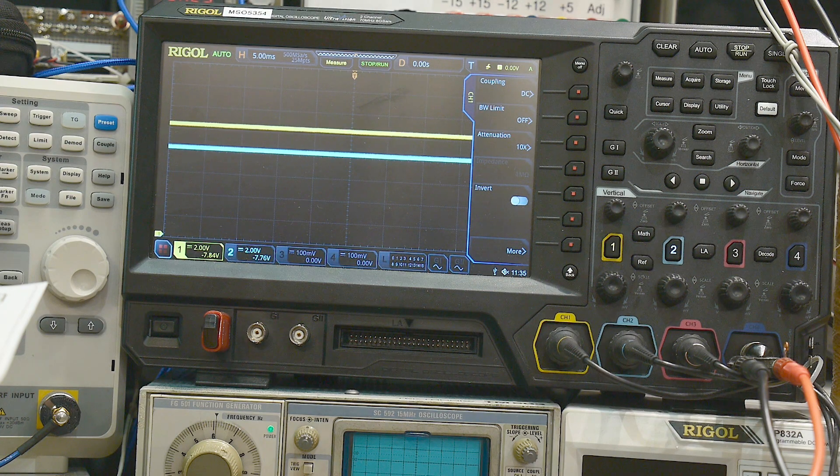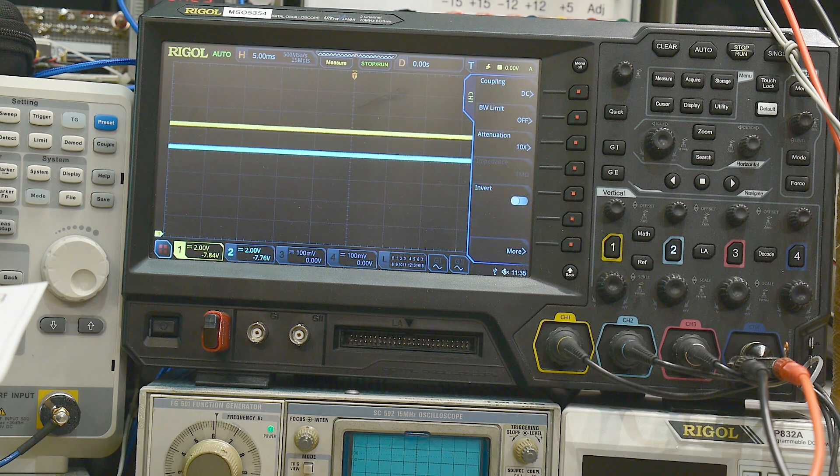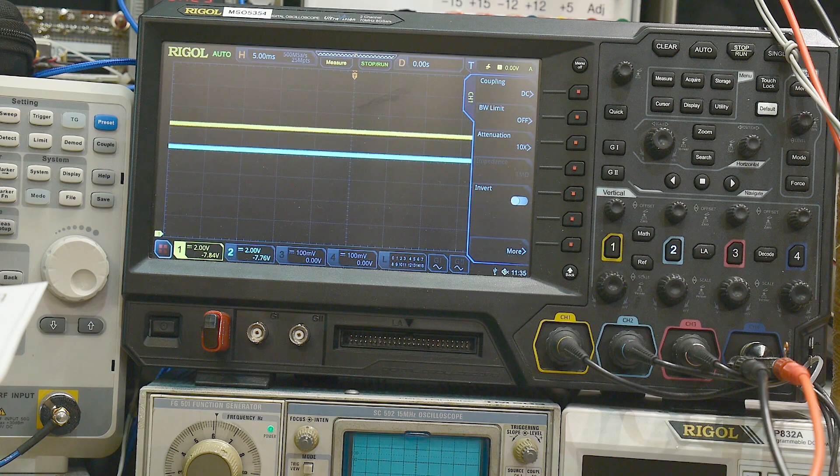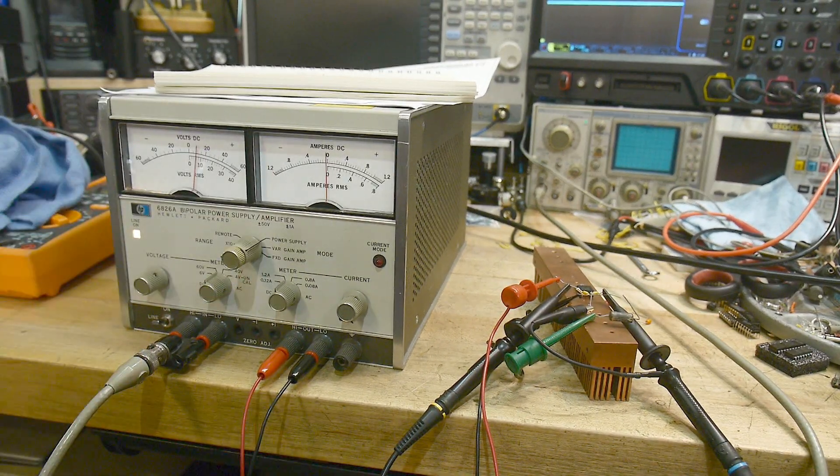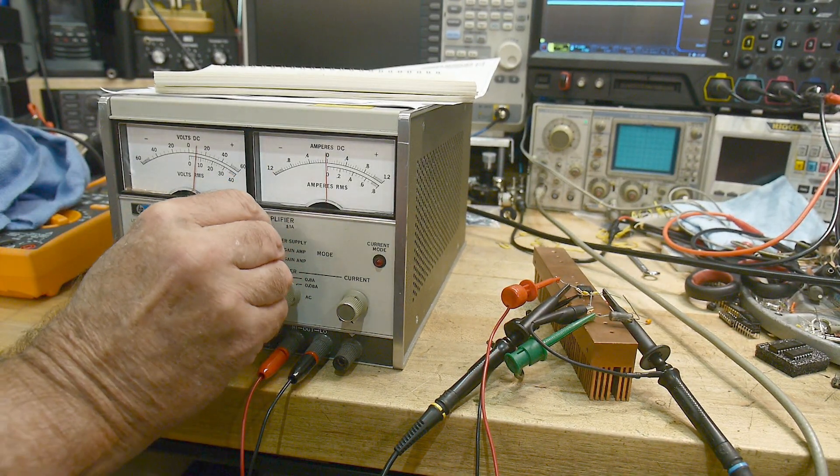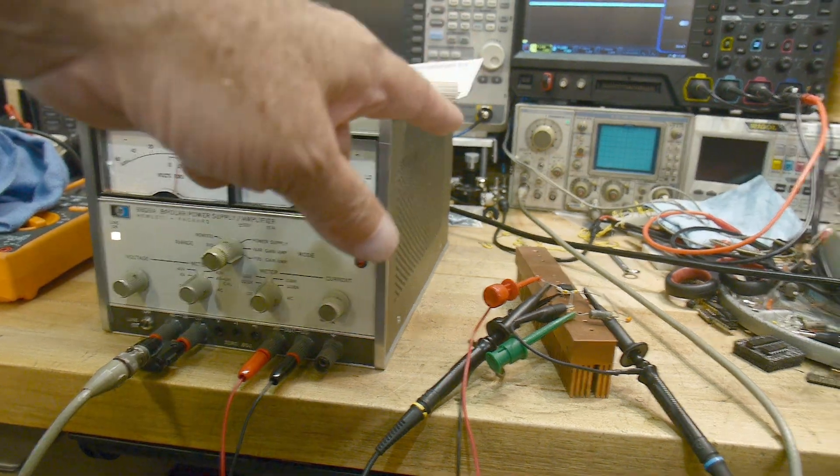Does the three-terminal regulator get rid of the ripple entirely, or is there a little bit left behind? So imagine that yellow trace has a ripple on it. Well, we can do that over here. I'm going to put this into amplifier mode.